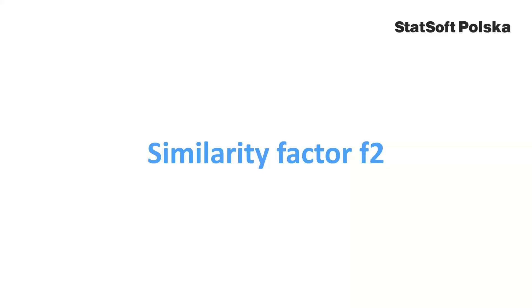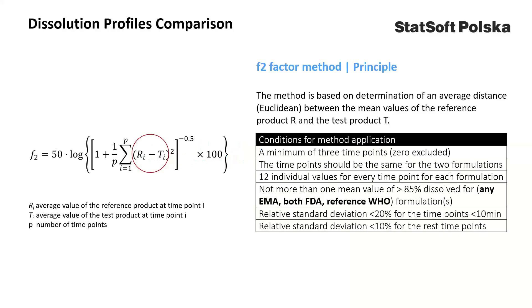We'll start with the standard, most commonly used similarity factor method f2. The similarity factor f2 is the average distance between the mean values of the reference product and the test product. Conditions for applicability of the method include: a minimum of three time points; same time points for the two formulations; at least 12 individual values for every time point for each formulation; not more than one mean value above 85 percent dissolved — or any, according to the U.S. regulation; and relative deviation less than 20 percent for time points below 10 minutes and less than 10 percent for the remaining time points.